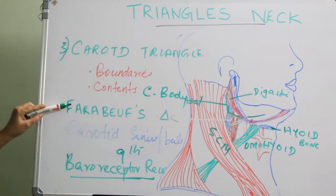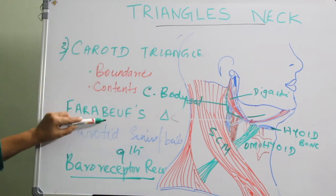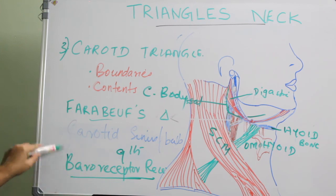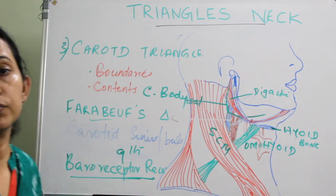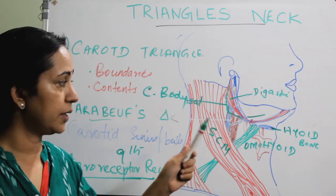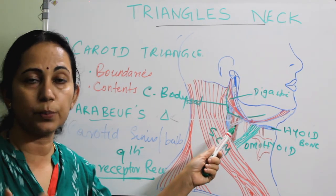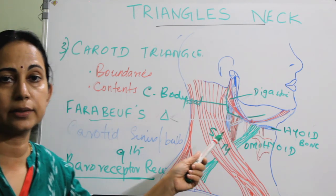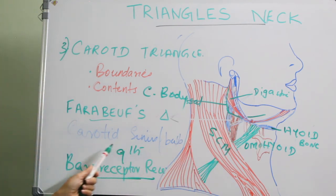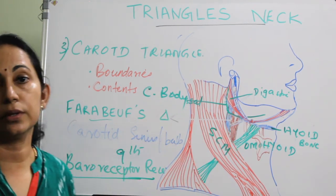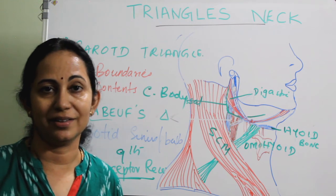There is another triangle located within — the Farabeuf triangle. The clinical significance includes that important structures are superficial in the neck within this triangle, and also the carotid sinus and the carotid body are important clinical structures.